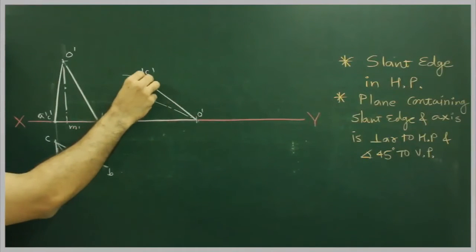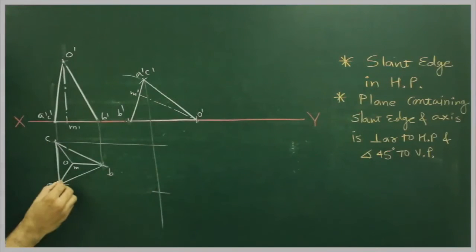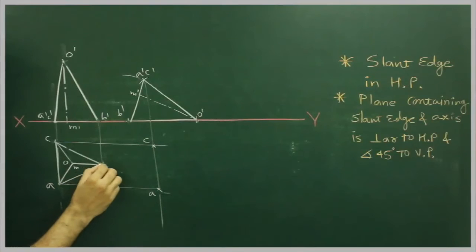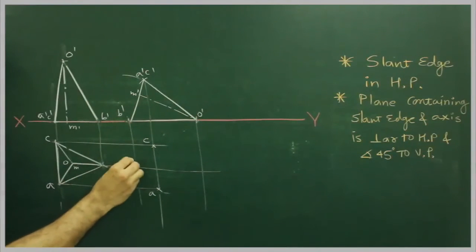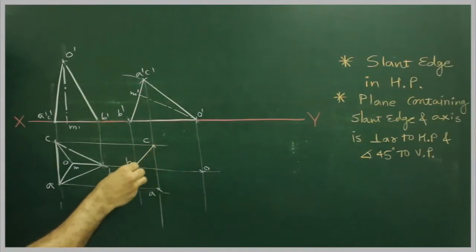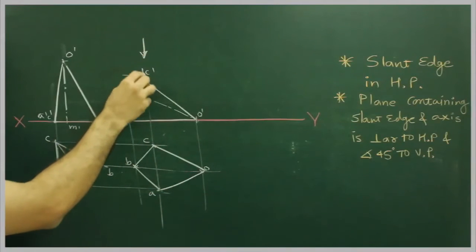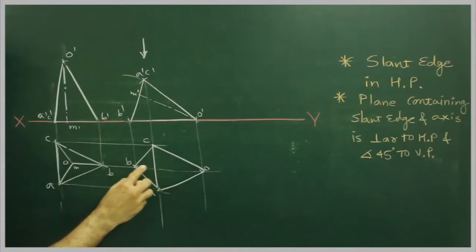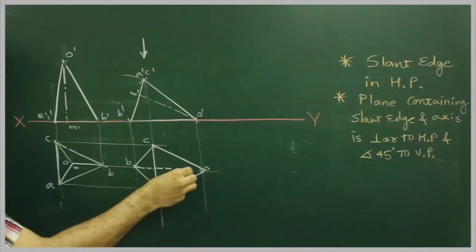So you extend from here A dash, C dash, and from here A dash, C. A dash, C dash is nearer to here, so AC will be down, and O dash, B dash is away from here, so AC will be down.